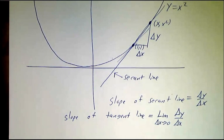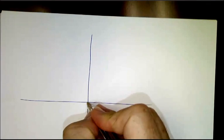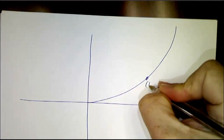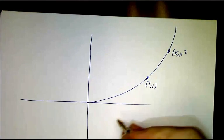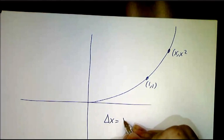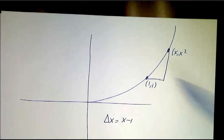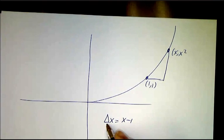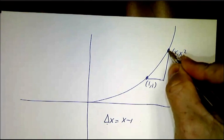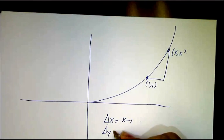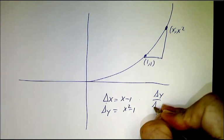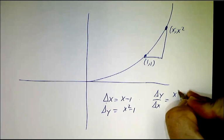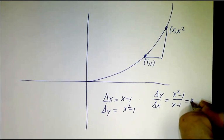So let's do that for the case of our curve. Drawing it again. Here we are at (1,1). And here's another point, (x, x squared). So delta x is x minus 1 – the change in x is x minus 1 because this is at x and this is 1. The change in y is x squared minus 1. So delta y over delta x is (x squared minus 1) over (x minus 1). And that's x plus 1.